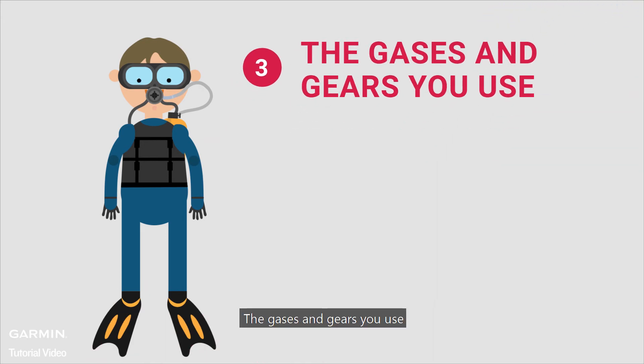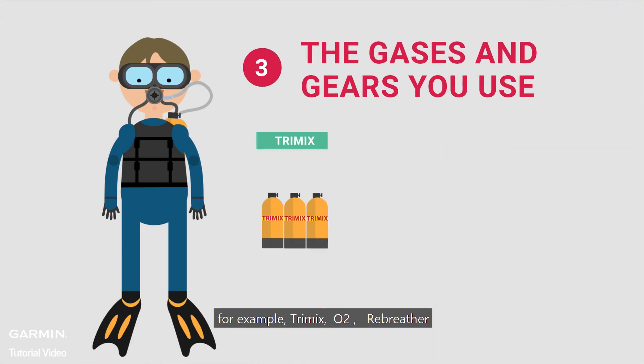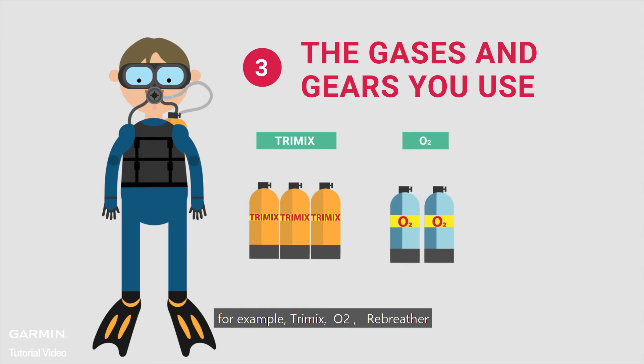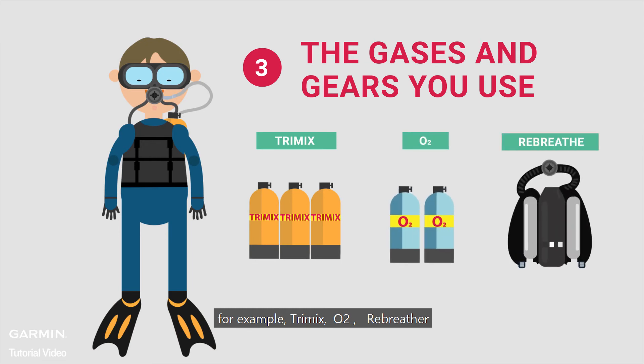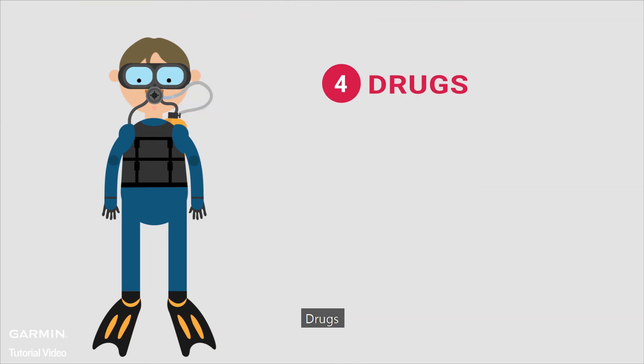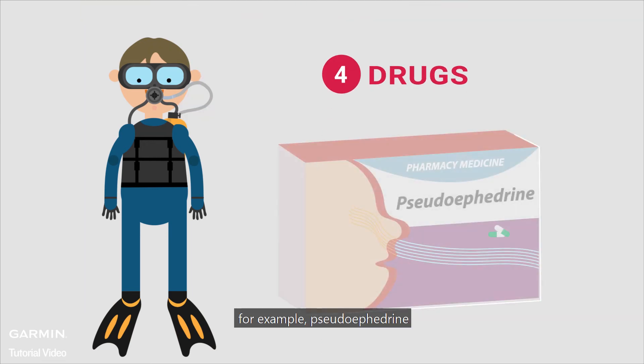Number 3, the gases and gear you use — for example, Trimix O2 or a rebreather. Number 4, drugs — for example, pseudoephedrine.